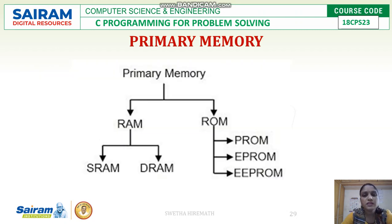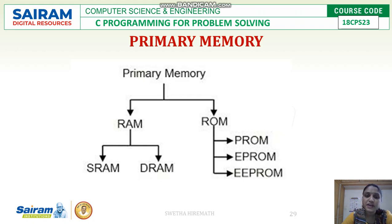To recap, primary memory is divided into RAM and ROM. RAM is further divided into SRAM and DRAM, and ROM is divided into PROM, EPROM, and EEPROM.